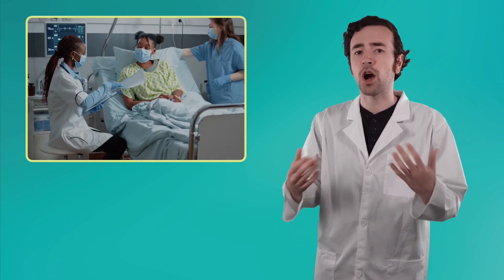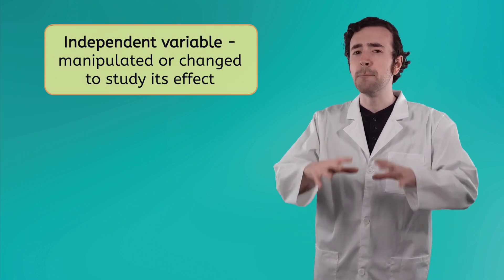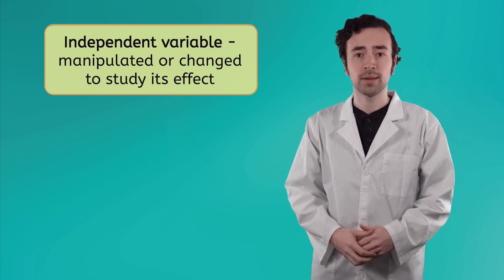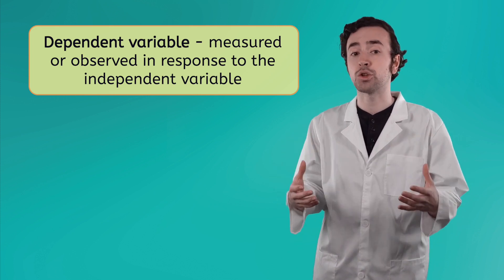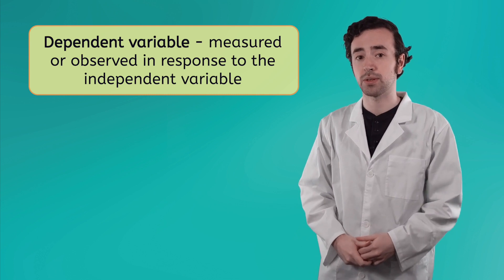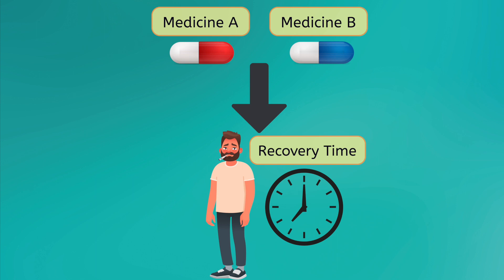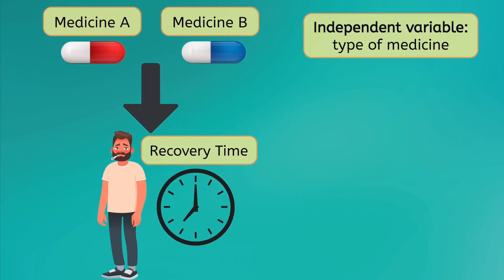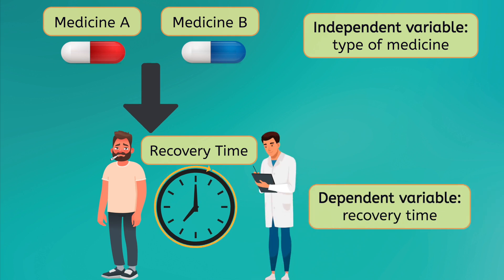But what if I want to test how one thing specifically affects another, like how sunlight affects plant height, or how medicine affects recovery time from an illness? To accomplish this, I'll need to perform an experiment. Experiments involve clearly defined independent and dependent variables. An independent variable is the variable that the scientist manipulates or changes in order to study its effect. The dependent variable, in turn, is the variable that is measured or observed in response to the independent variable. For example, let's say we want to test how two types of medicine affect the time it takes for someone to recover from an illness. The type of medicine given is manipulated by the researcher, so it's the independent variable. The recovery time is measured as a result, making it the dependent variable.